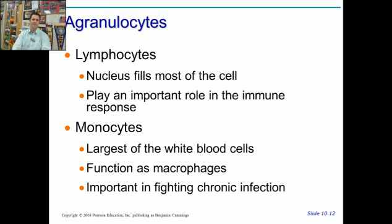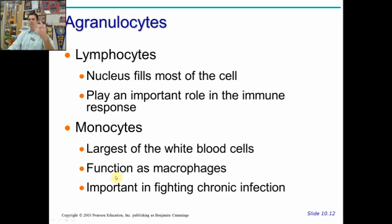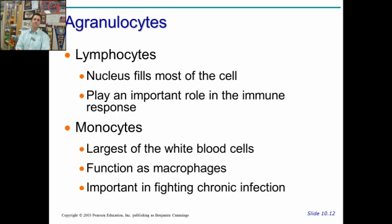The agranulocytes: lymphocytes, which will be the majority focus in Chapter 16. Their nucleus is gigantic. They play a really important role in the immune response, in attacking as well as identifying. Monocytes are the largest of the white blood cells, and they mature into macrophages. Monocytes don't really do much activity themselves — they become macrophages, which work like Pac-Man, consuming other portions, and are really important for fighting chronic infections and pathogen identification.